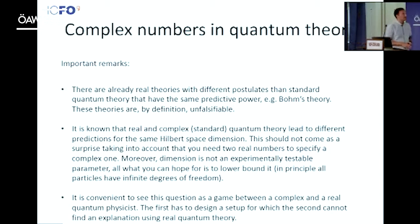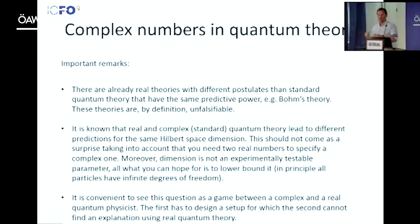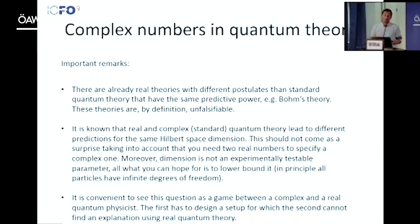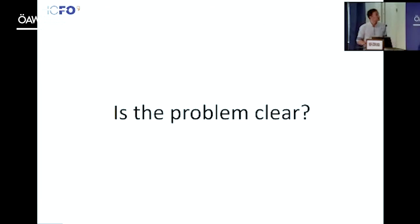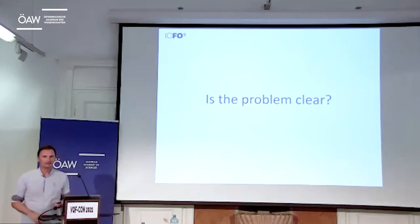As it happens for a Bell test, it's convenient to see what I'm going to say as a game between a complex and a real quantum physicist — a believer in complex quantum theory and a believer in real quantum theory. In the same way as for a Bell test, you have the person who believes in quantum theory versus the one who believes in EPR local hidden variable models. The complex quantum theorist proposes a setup for which the real quantum theorist cannot find an explanation. If the real quantum theorist finds an explanation for all possible setups, then real quantum theory wins.